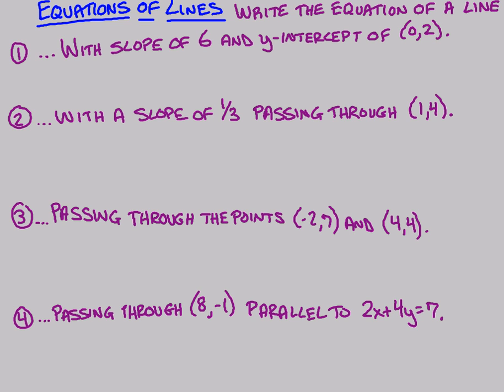This first one is asking you to find the equation of a line with a slope of 6 and a y-intercept of 2. All these problems, you're thinking y equals mx plus b. Anytime they say the equation of a line, or we'll talk about tangent lines, or normal lines, always be thinking y equals mx plus b.